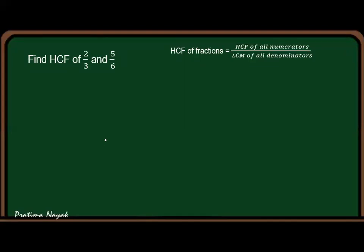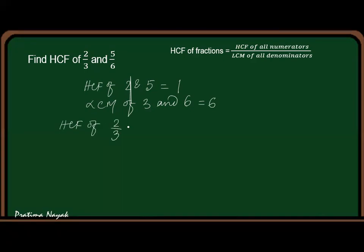So let us take some examples. First I am taking two. So HCF of 2/3 and 5/6 is: first I'll get HCF of 2 and 5, that will be 1. Then I'll get LCM of 3 and 6, that will be 6. So HCF of 2/3 and 5/6 is equal to 1/6. Answer.